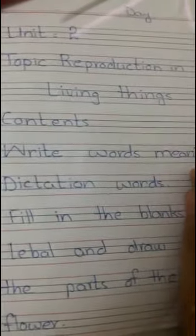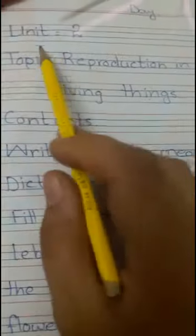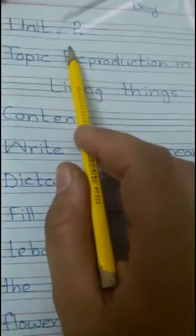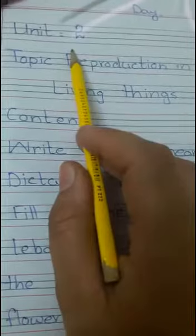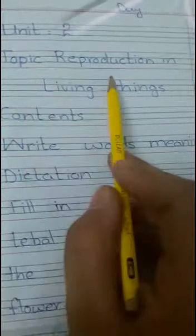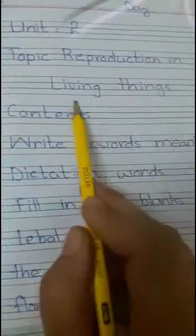Assalamu alaikum students, how are you? Class 5, today we do written work of unit 2. So take out your science copies and open it. First of all, draw a margin line on one side of your science copy, then write the date and day, then write Unit 2, and the topic name is Reproduction in Living Things.